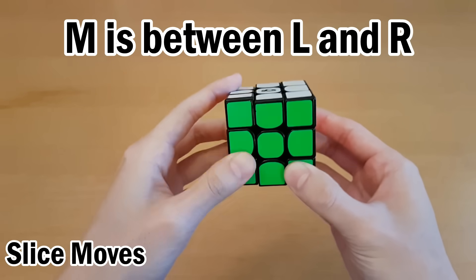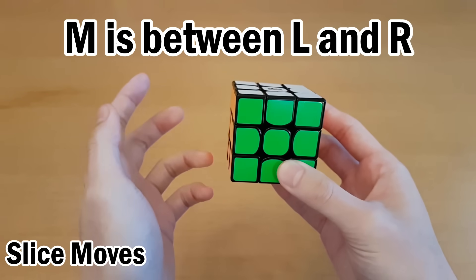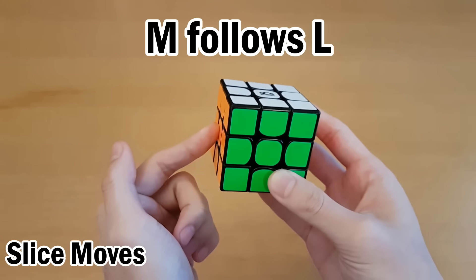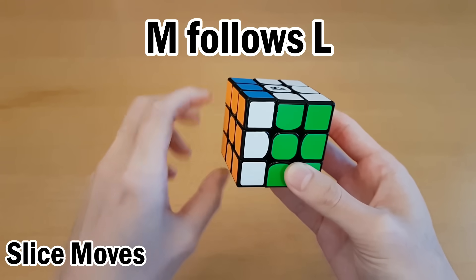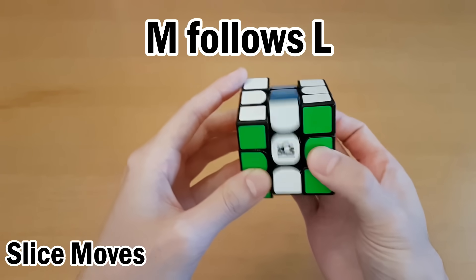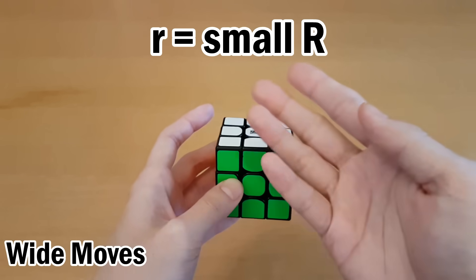the M layer is between L and R. It is closer in the alphabet to the letter L, so it follows the same directions as L. So L goes this way, so M will also go this way. If you see a lowercase letter read as r,